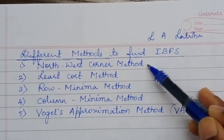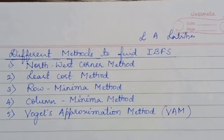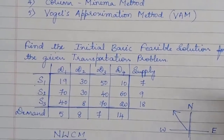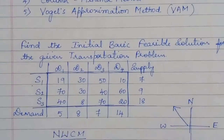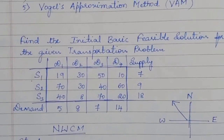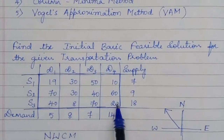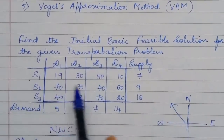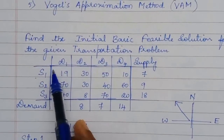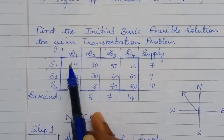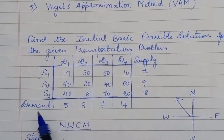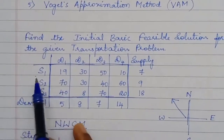In the northwest corner method, allocation means satisfying or balancing supply and demand. With the cost matrix divided into four quadrants — east, west, north, and south — we chose the northwest corner cell for the allocation to begin with. So the northwest corner method says you have to choose the northwest corner cell at each step for the allocation.